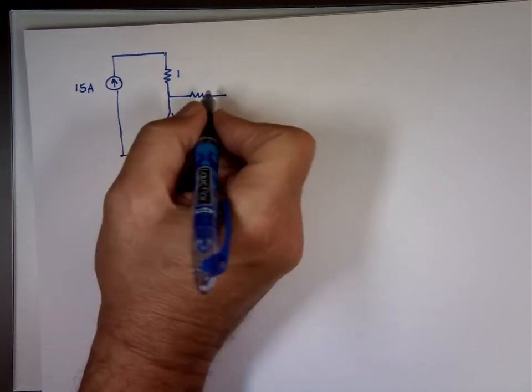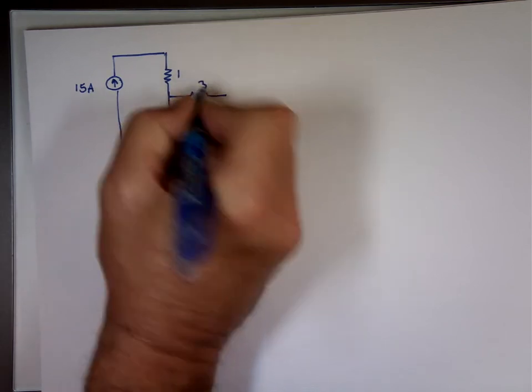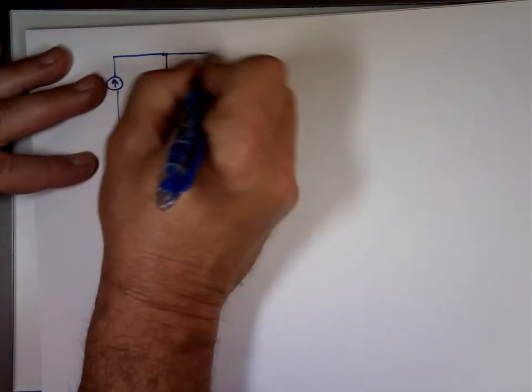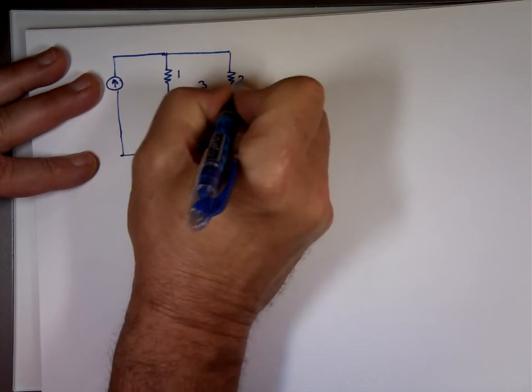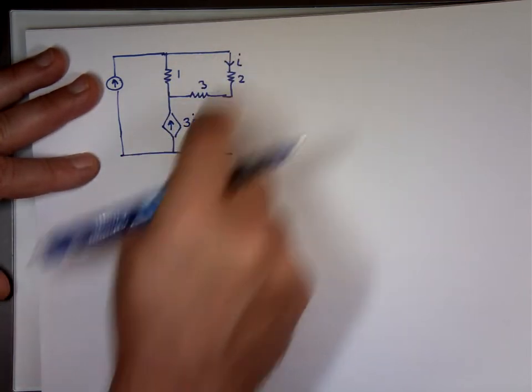There's a resistor here of three ohm. There is another resistor up there of two ohm. And this current coming down is I. So this value of the current source depends on that current.